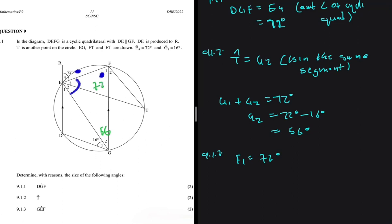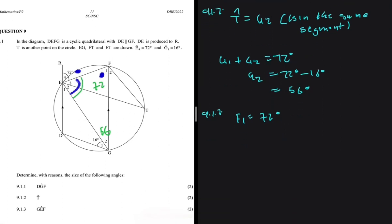So it should be easy to find GEF using the sum of angles on a triangle. So we're going to say that GEF is equal to 180 minus 56 minus 72 - the sum of angles on a triangle.